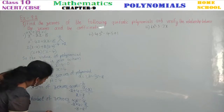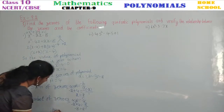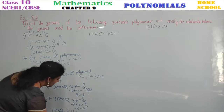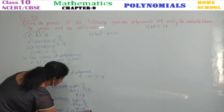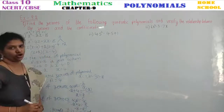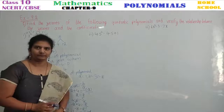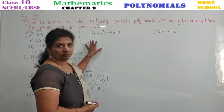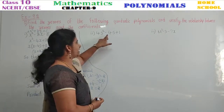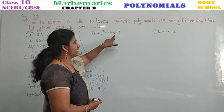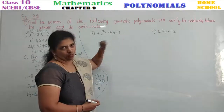Hence it is verified. With this we end our first problem. The second problem is 4s² - 4s + 1.